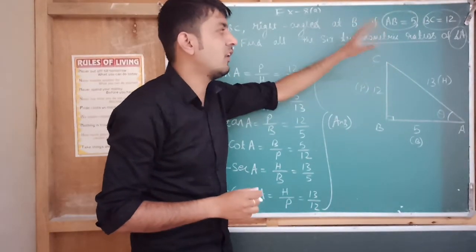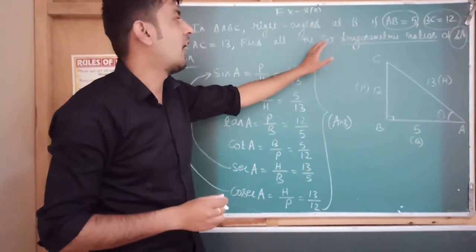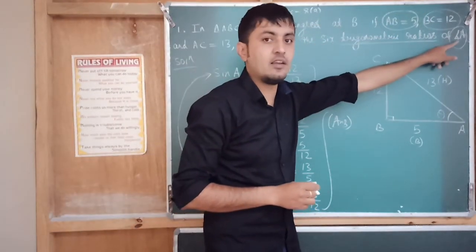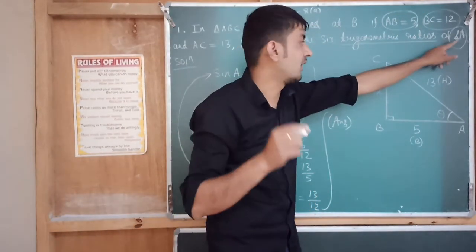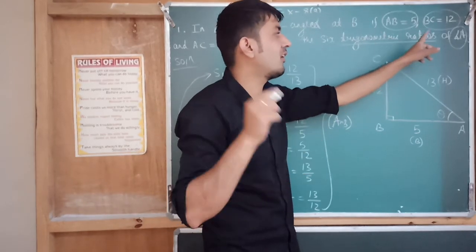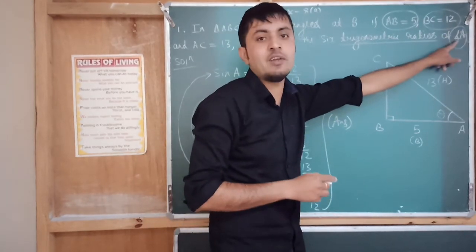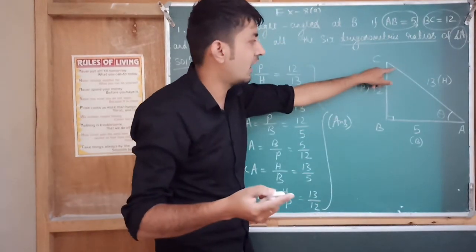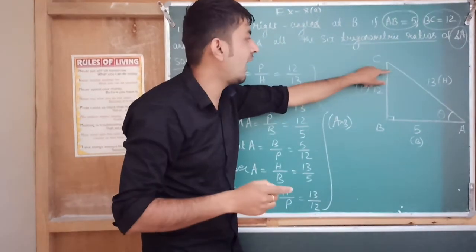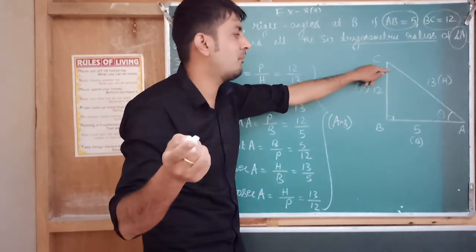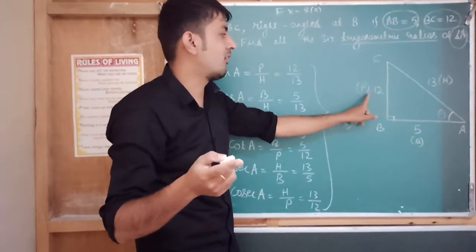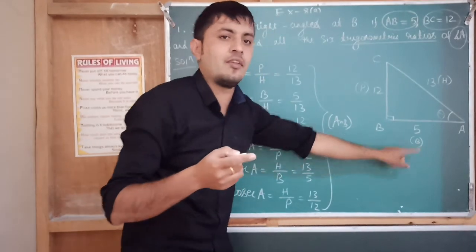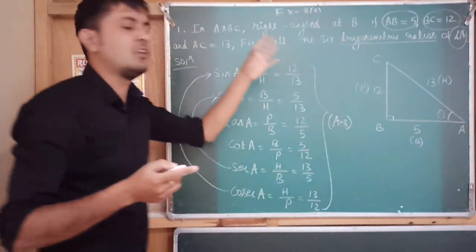If I ask you to find all six trigonometric ratios of angle C instead of A, then you mark the angle at C. When you mark the angle at C, your base and perpendicular will change accordingly — the base will be this side and the perpendicular will be this side. I hope that is clear to you.